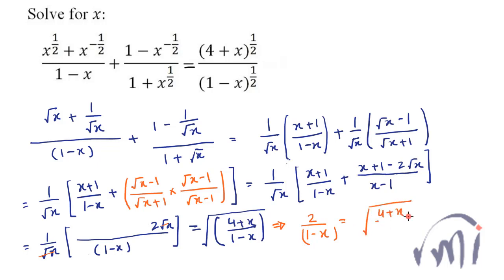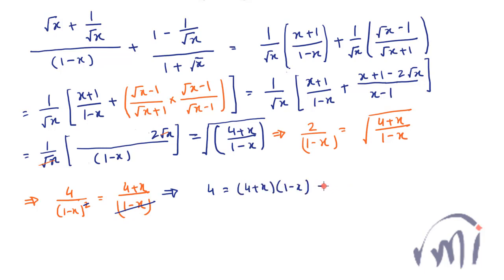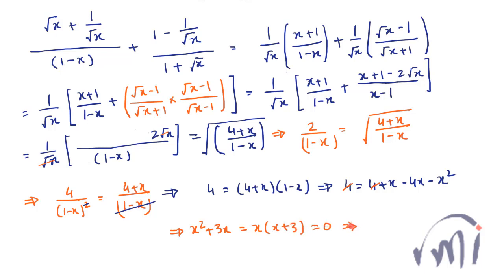Now let's square both sides. I'll get 4 divided by 1 minus x, so this 1 minus x will cancel 1 minus x over here, and from here we get 4 equals 4 plus x multiplied by 1 minus x. If I multiply both brackets I'll get 4 equals 4 plus x minus 4x minus x squared. This 4 cancels that 4, and from here we get x squared plus 3x, which can be written as x multiplied by x plus 3, equal to 0. So x equals 0 or x equals minus 3.